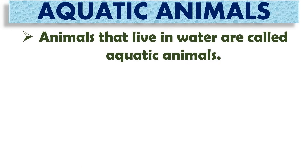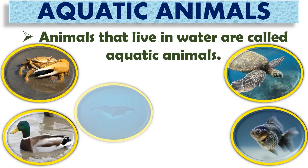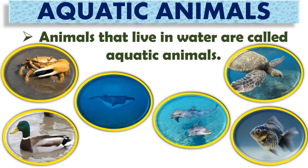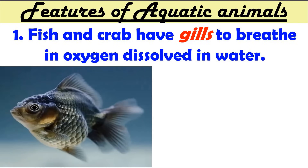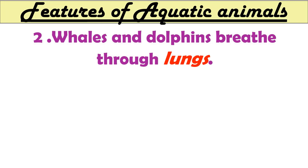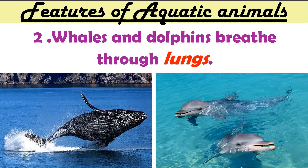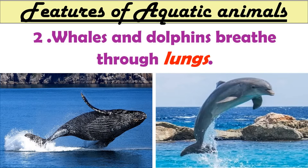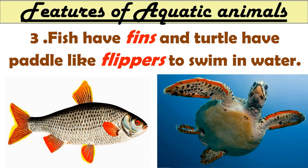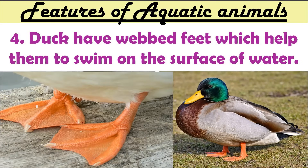Animals that live in water are called aquatic animals — crabs, turtles, ducks, fish, whales, and dolphins are some examples. Fish and crabs have gills to breathe in oxygen dissolved in water. Whales and dolphins do not have gills; they have lungs to breathe and come up to the surface of the water from time to time. Fish have fins, and turtles have paddle-like flippers to swim. Ducks have webbed feet which help them swim on the surface of the water.